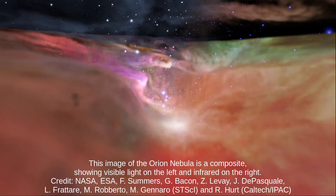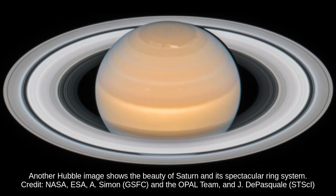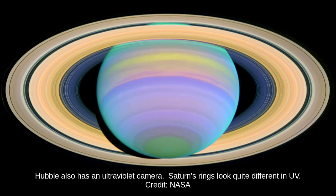This unusual view of the Orion Nebula is actually two images blended together. On the left we can see the nebula in visible light, and on the right, infrared. This Hubble image shows the beauty of Saturn and its spectacular ring system. Hubble also has an ultraviolet camera. Saturn and its rings look quite different in ultraviolet.